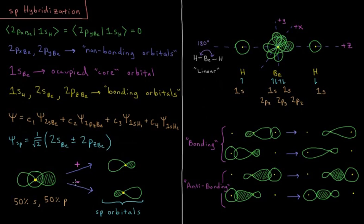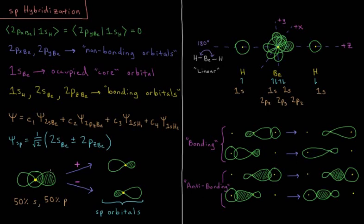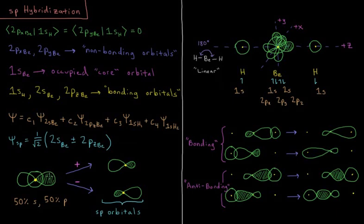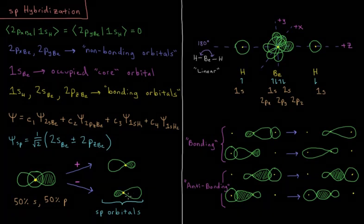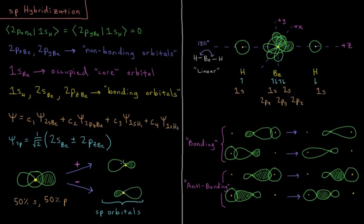And the opposite case, where they're subtracted from one another, where I'm going to flip the sign on pz. So now it's going to constructively overlap on this side and destructively overlap on the other side. So this gives me the mirror image 180 degrees from my other orbital here. So now these two orbitals are orthogonal to one another.